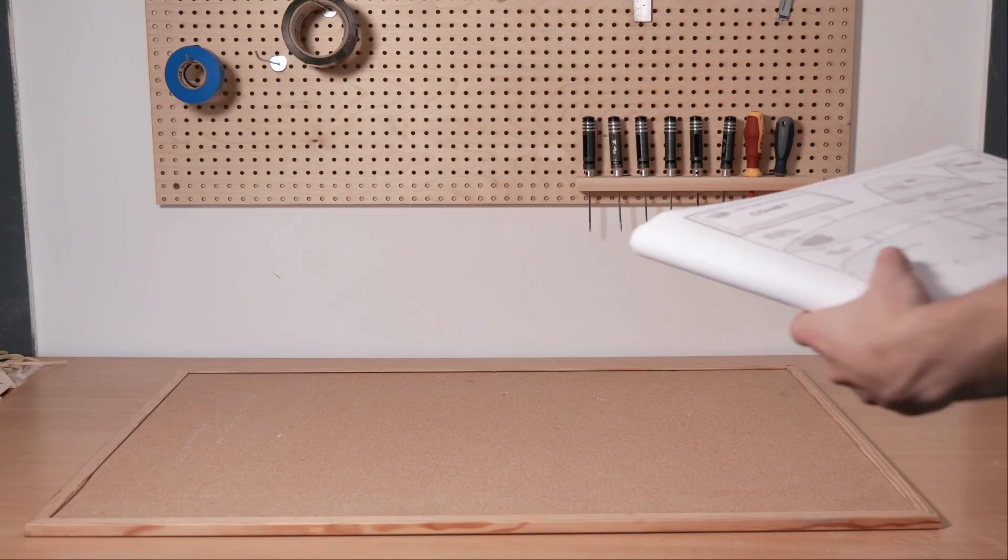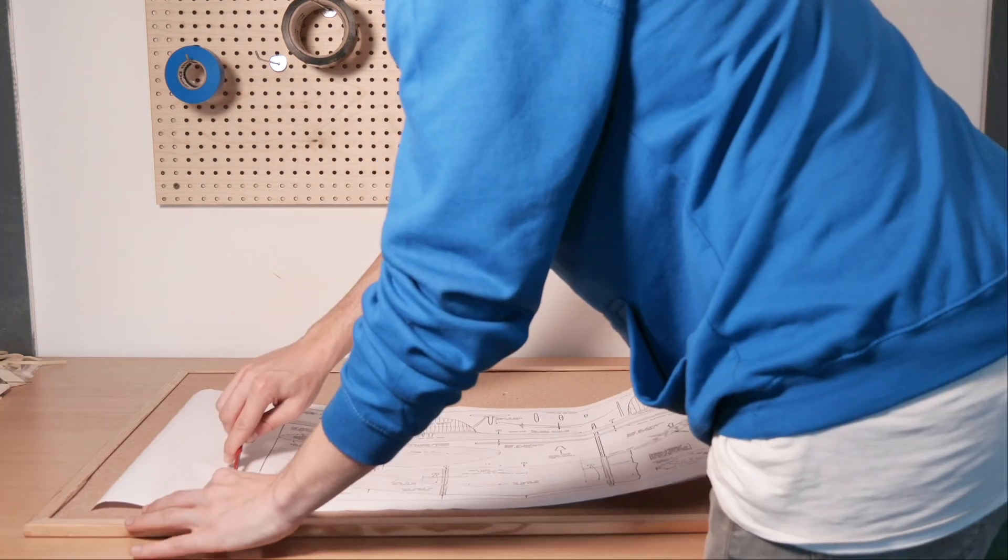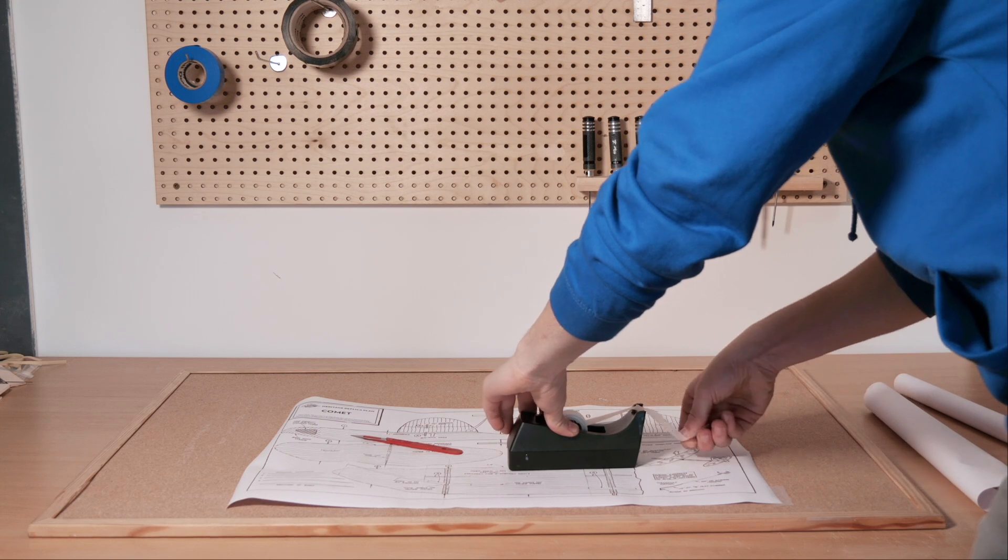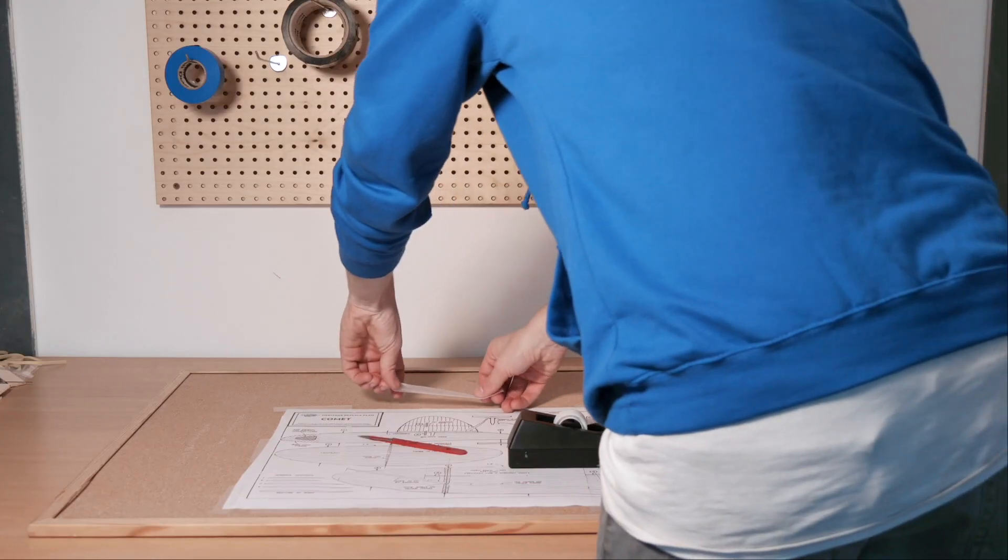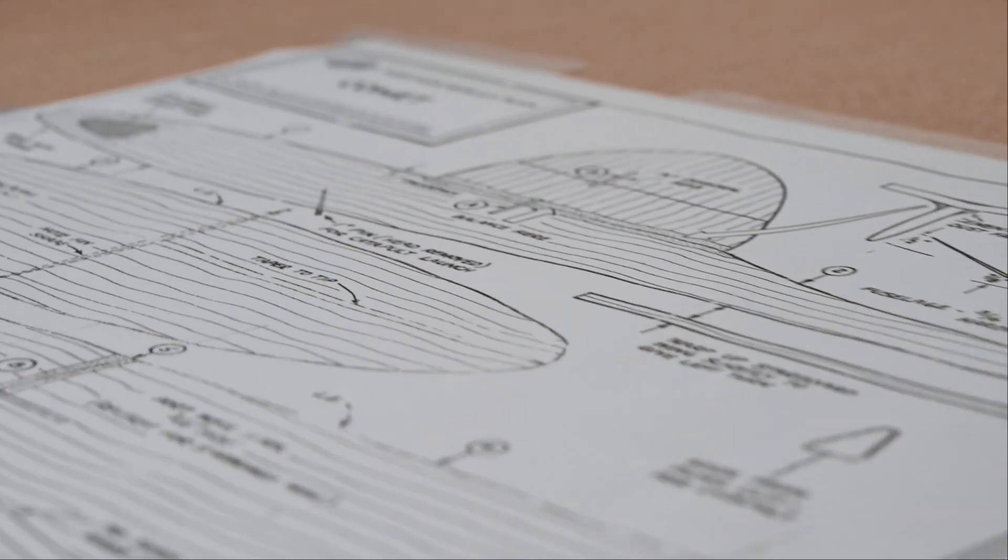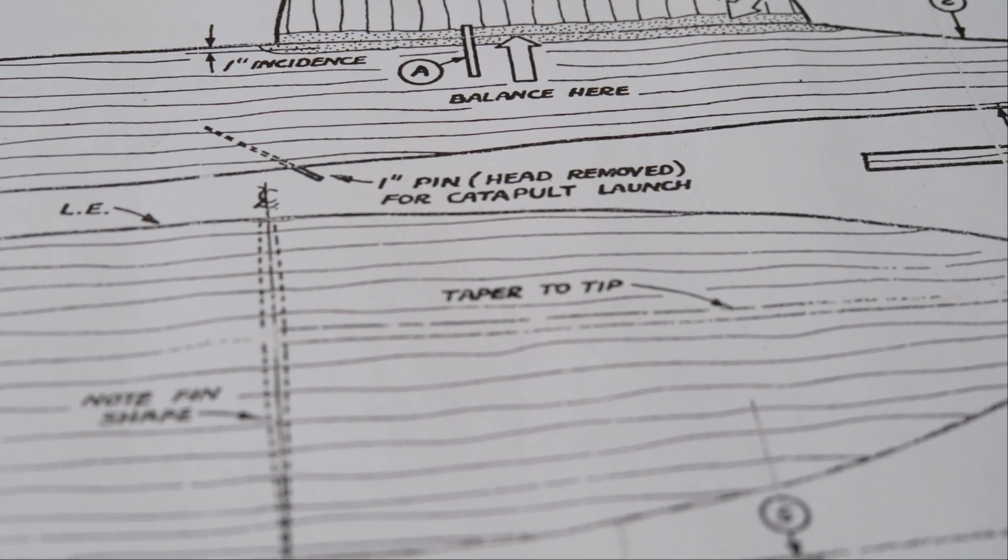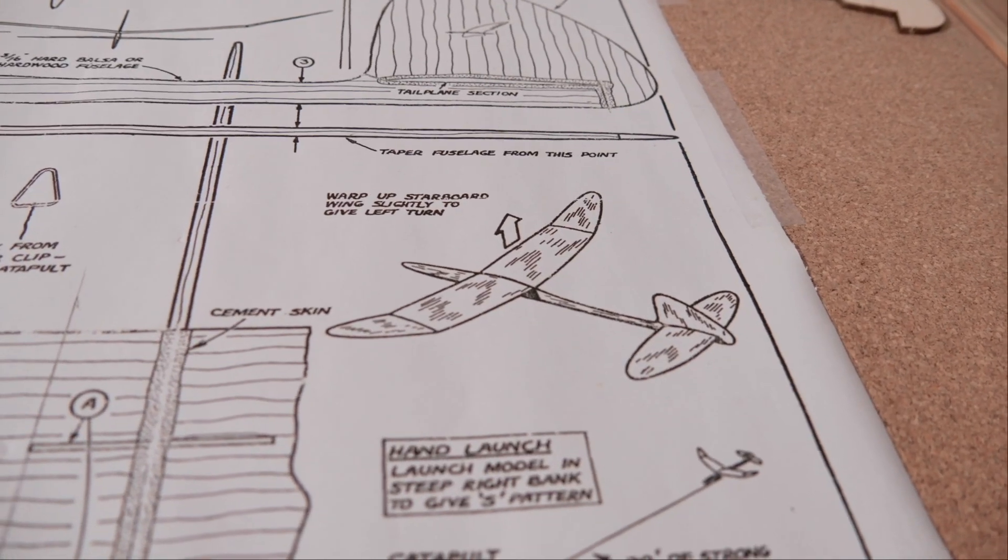Although not completely necessary with this kit, it might be a good idea to roll out the plan and stick it to a board. As with other balsa wood kits, the one to one scale drawing can be used to check alignment, and parts can be pinned down if necessary over a normal office pinboard. It's also quite nice to clearly see what you're going to be building.